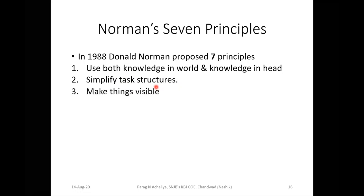The third principle states to make things visible. Whatever we are going to do in the system, everything should be properly visible — meaning everything should be properly understandable to each and every stakeholder of the system.